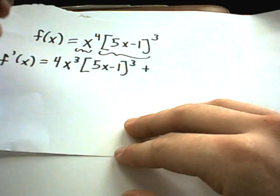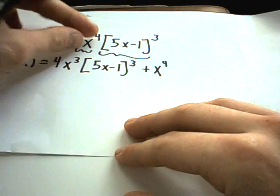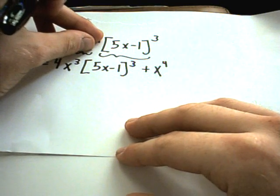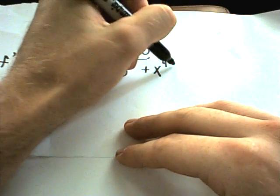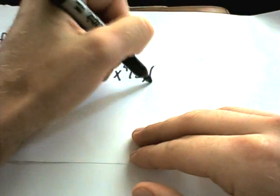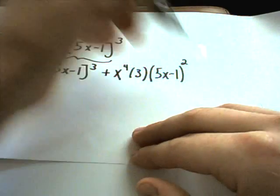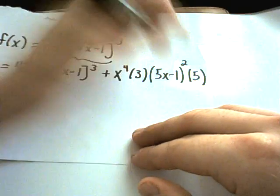And then from that, I will leave the x to the fourth alone. And I'll take the derivative of the other piece, remembering I have to use the chain rule. So the 3 will come out front. I'll leave the inside part alone. So 5x minus 1. I'll take 1 away and get to the second power. And then multiply that by 5.